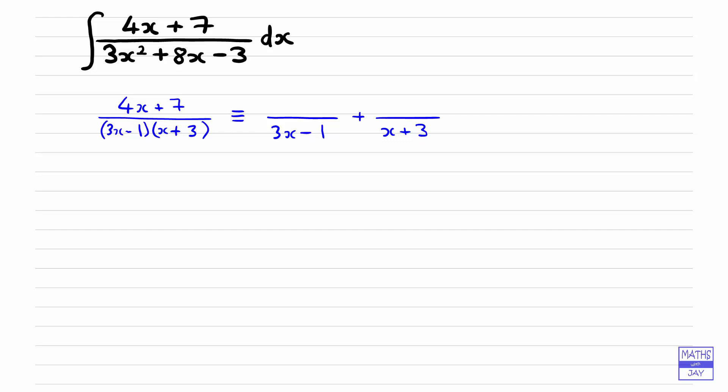So if you're familiar with the cover-up rule, you might like to use that. So we'll use that here, and if you're not familiar with that, then if you wait till the end of the video, we'll have a look at writing out the method in full. So using the cover-up rule, we're going to start by covering up the 3x minus 1, and we're going to replace x by a third.